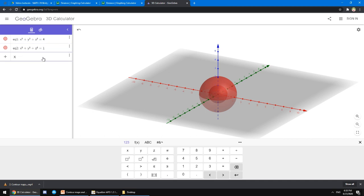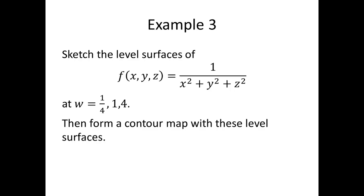And finally, x² + y² + z² equals 1/4. The smallest sphere in the middle of these two spheres is our level surface for w equals 4. This collection of level surfaces is our contour map. The only thing missing are the labels. So, don't forget to label your level surfaces. That's for our example number three.